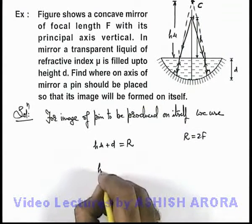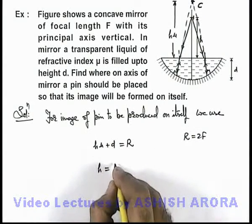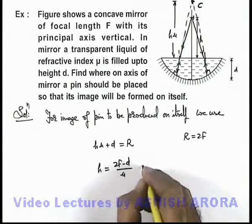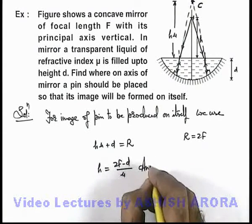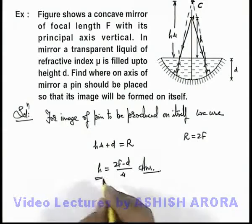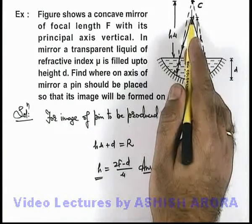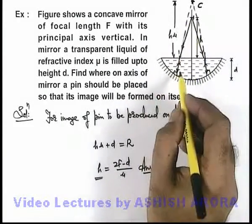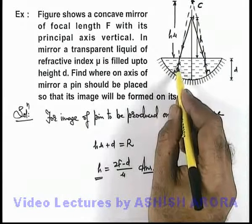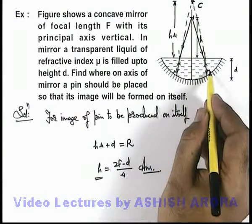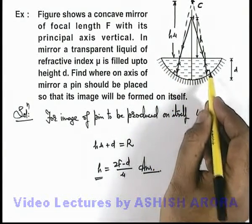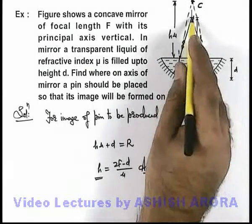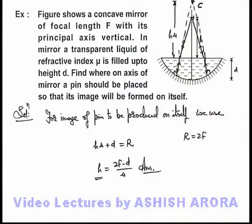In this situation, the value of h can be written as (2f - d) / mu, and that will be the answer to this problem. This is the distance where, when a pin is placed, its final image will be produced on itself, as the light rays incident on the mirror will be normal, and they will retrace their own path and produce the image at its own location.